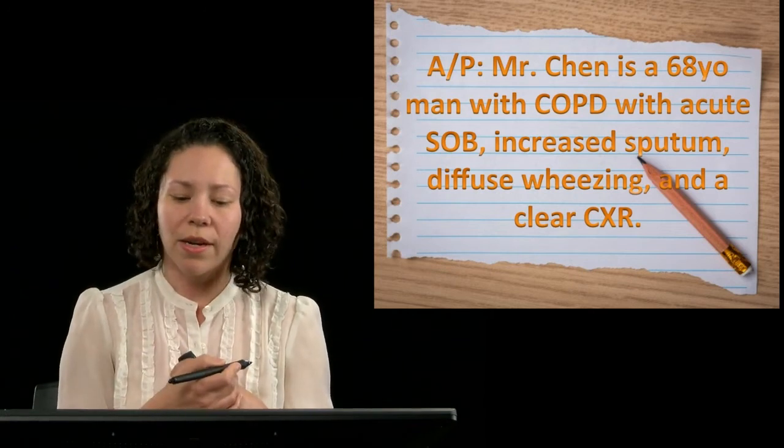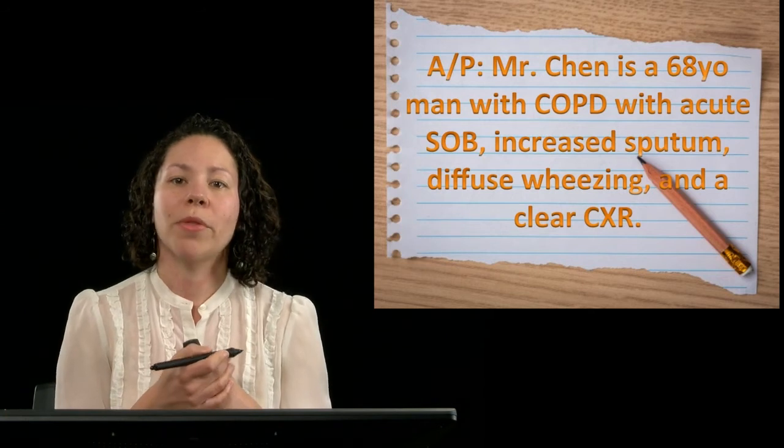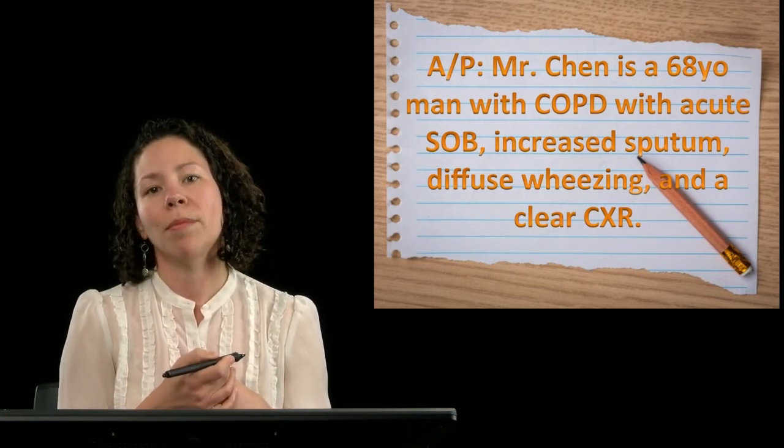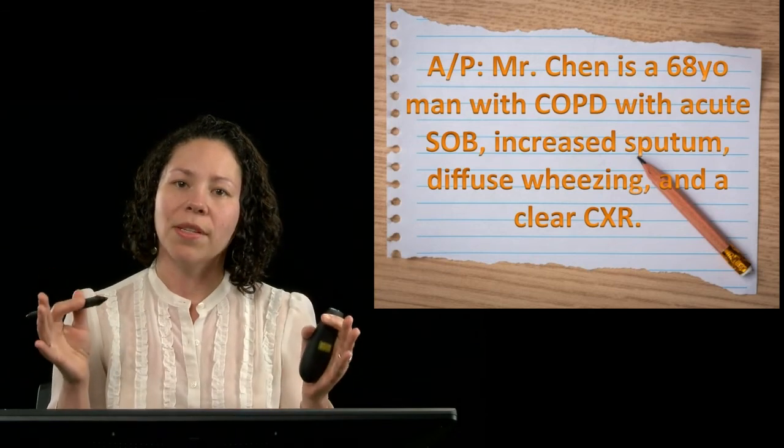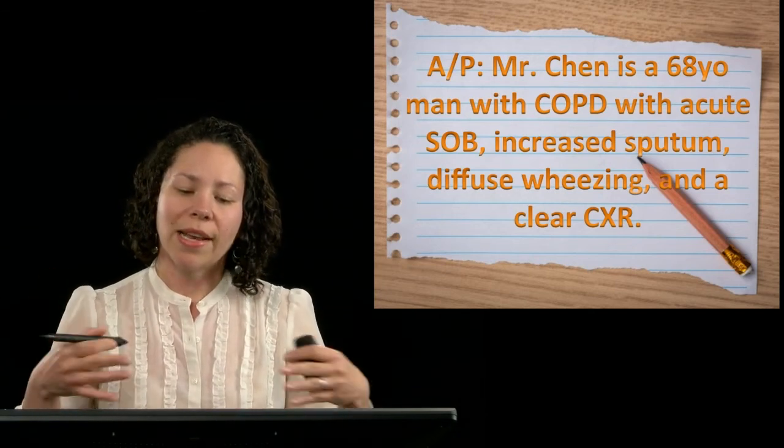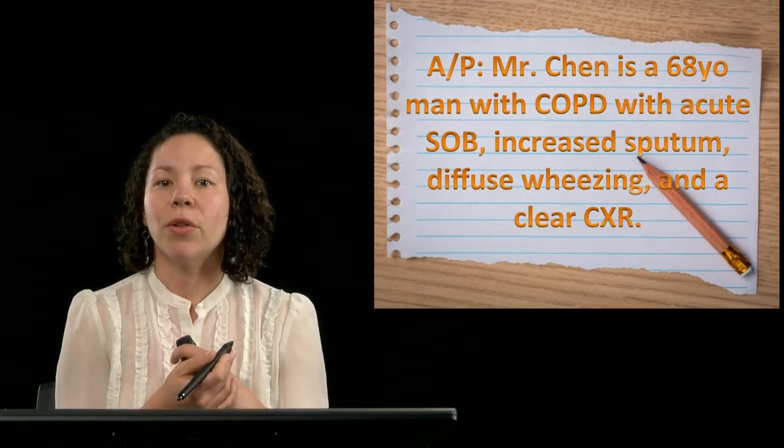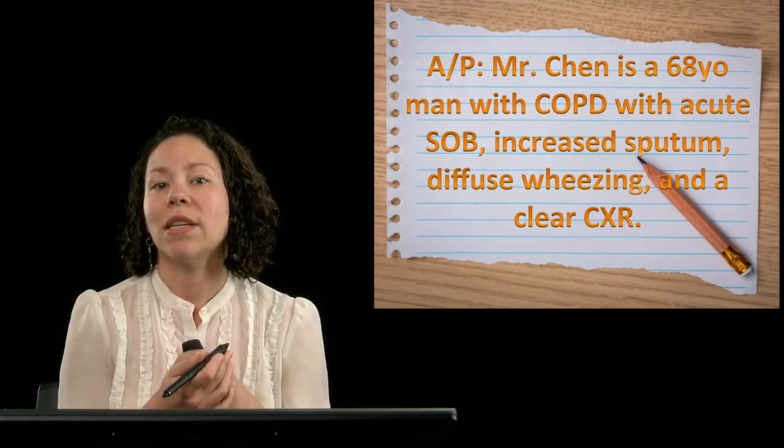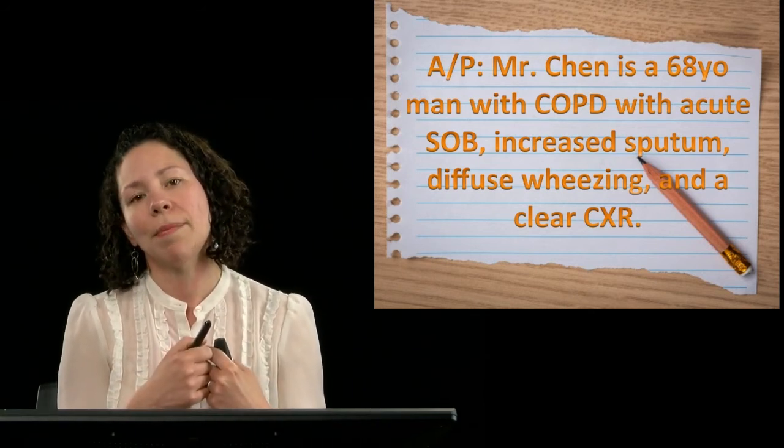So another example here, Mr. Chen is a 68-year-old man with COPD with acute shortness of breath, increased sputum, diffuse wheezing, and a clear chest x-ray. So just another encapsulation of a problem representation that now has maybe a little bit more context and information included to give you a sense of what my most likely diagnosis is.